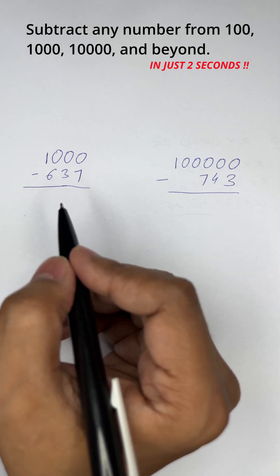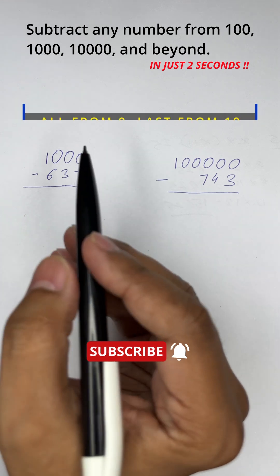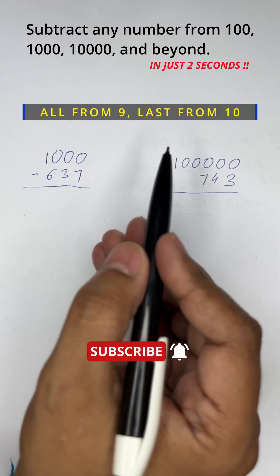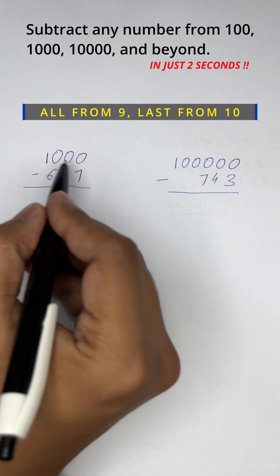Hello friends, today let's learn how to subtract any number from 100, 1000, 10000, and beyond. Just remember: all from 9, last from 10. Let's apply this to a couple of examples. Subtract 637 from 1000.